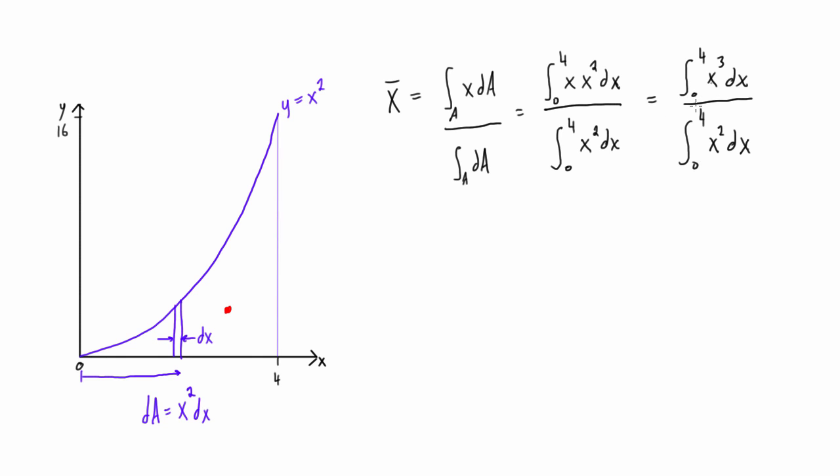So now this becomes just a very simple integration, we're just doing the reverse power rule. The integral of this, we just raise that 3 to the n plus 1, so we get x to the 4, and then we bring that down, so it's 1 fourth, and that is from 4 to 0. And then on the bottom, we have the same thing, we're going to raise that, so we have x cubed, and then we'll put that times 1 third, and this is over that same interval, 4 to 0.